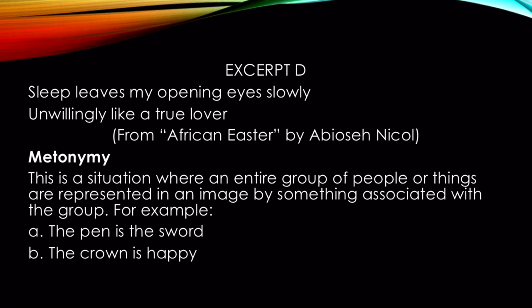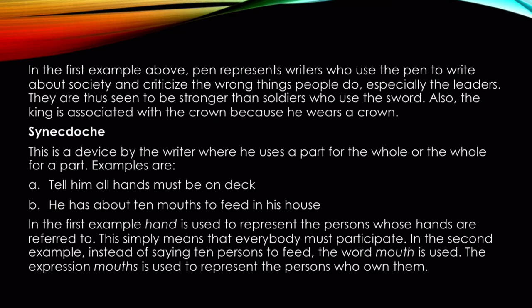Next is metonymy. This is a situation where an entire group of people or things are represented by something associated with the group. For example: 'The pen is mightier than the sword' — here, pen represents writers who criticize wrongdoings, and they are seen as stronger than soldiers who use the sword. Another example: 'The crown is happy' — the king is associated with the crown because he wears one.